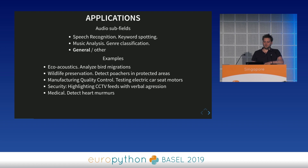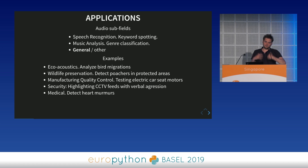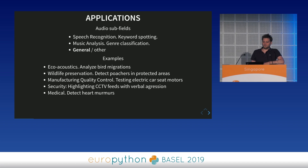We still have examples across a wide range of things. Anything you can do with hearing as a human, we can get close to in classification tasks with machines today. In ecology, you might want to analyze bird migrations using sensor data, or detect poachers in protected areas. It's used in quality control and manufacturing — for instance, testing electric car seats to confirm all motors run. In security, it helps monitor large amounts of CCTV by analyzing audio. And in medical applications, you could detect heart murmurs indicative of a heart condition.